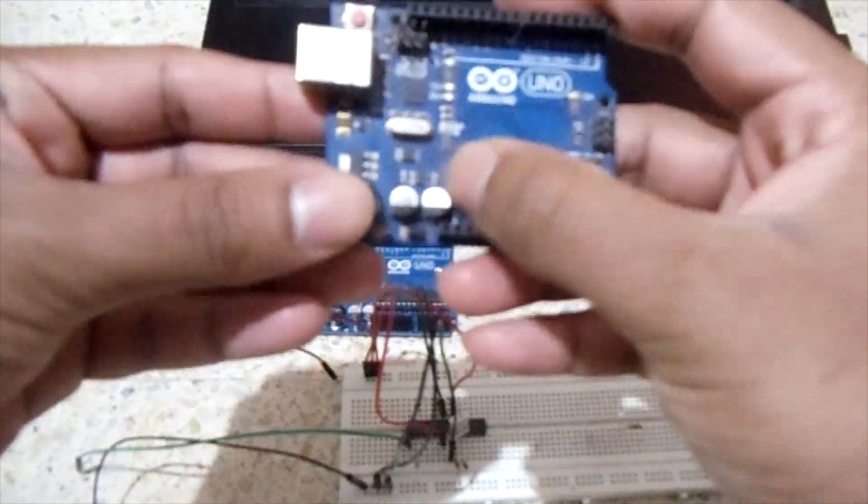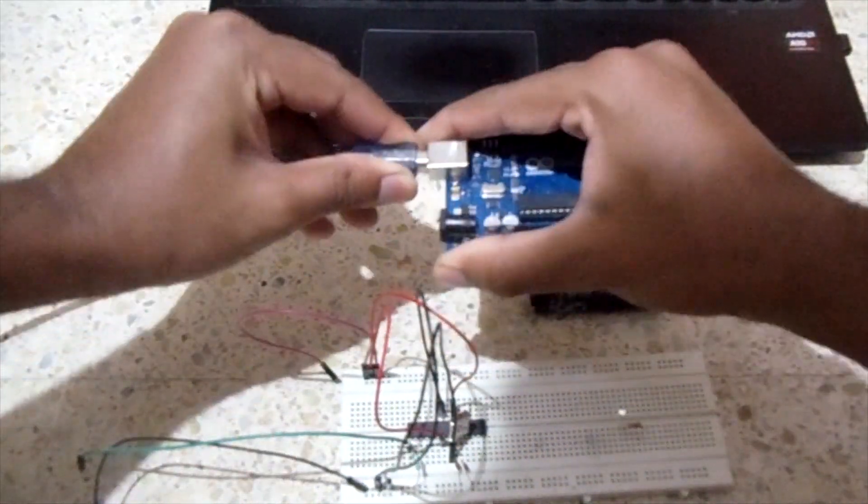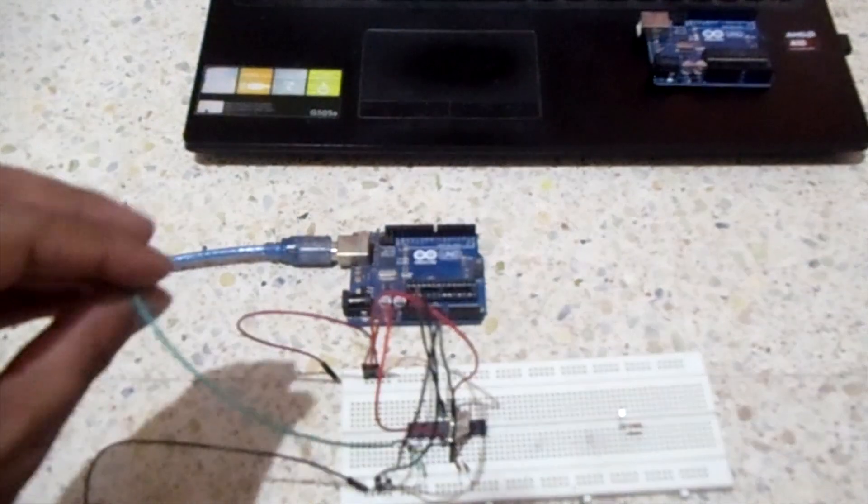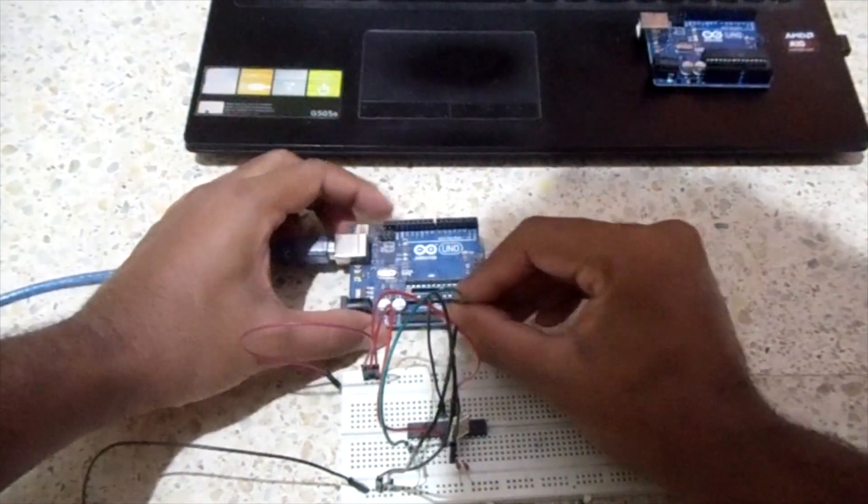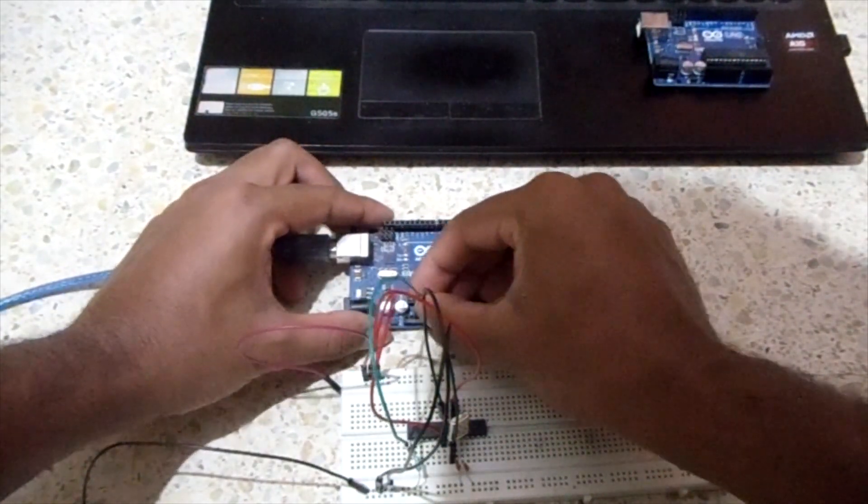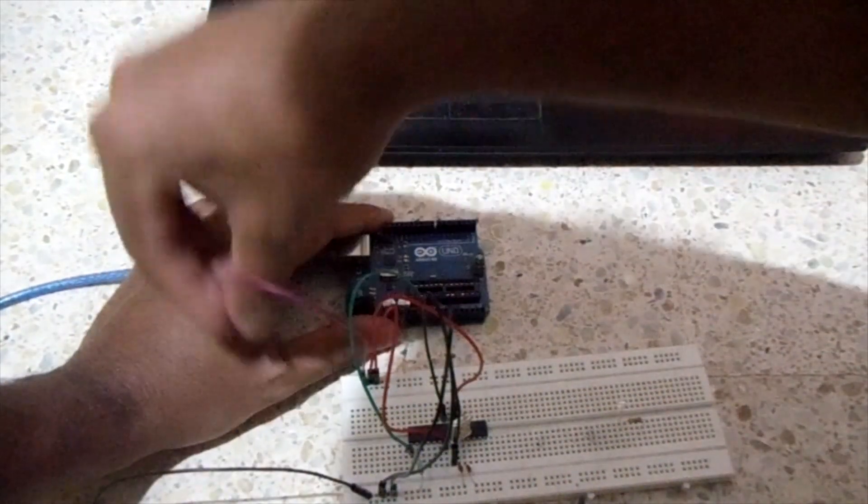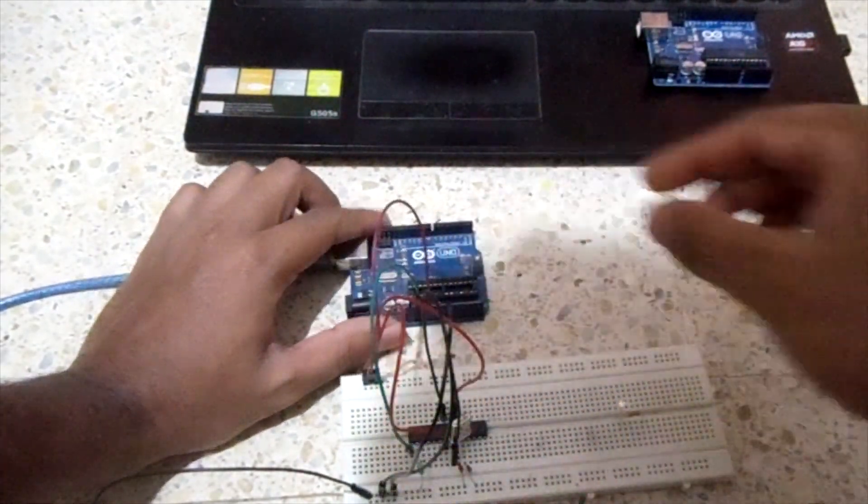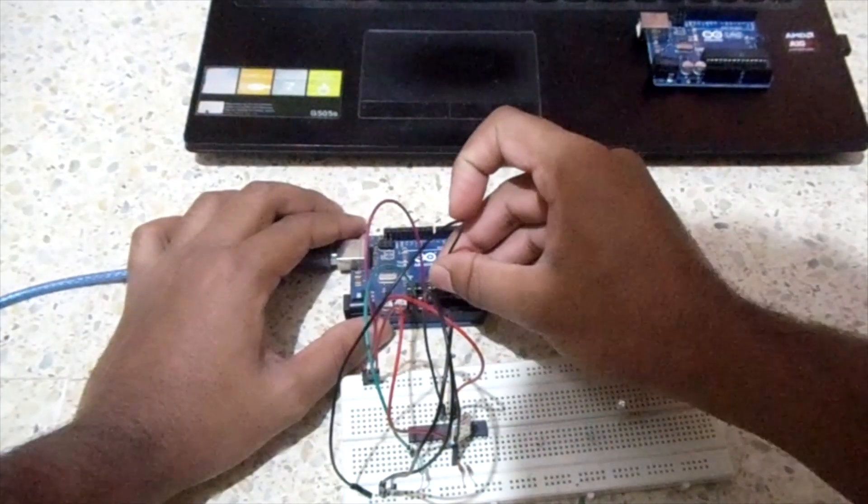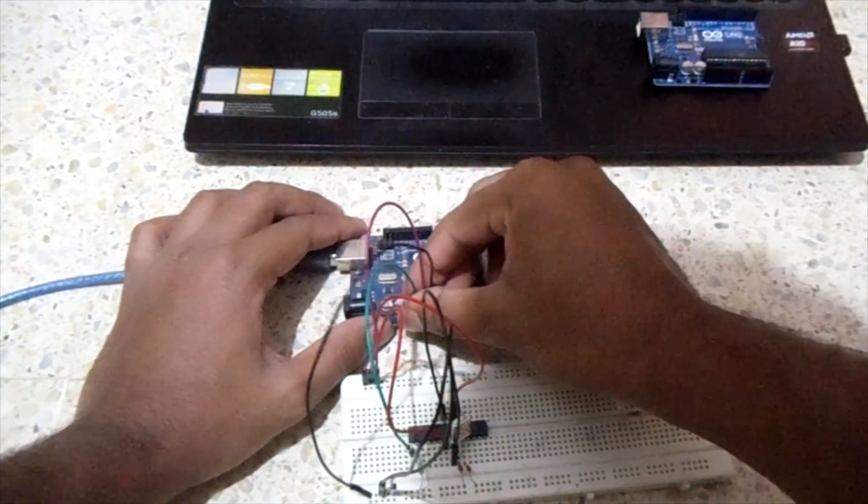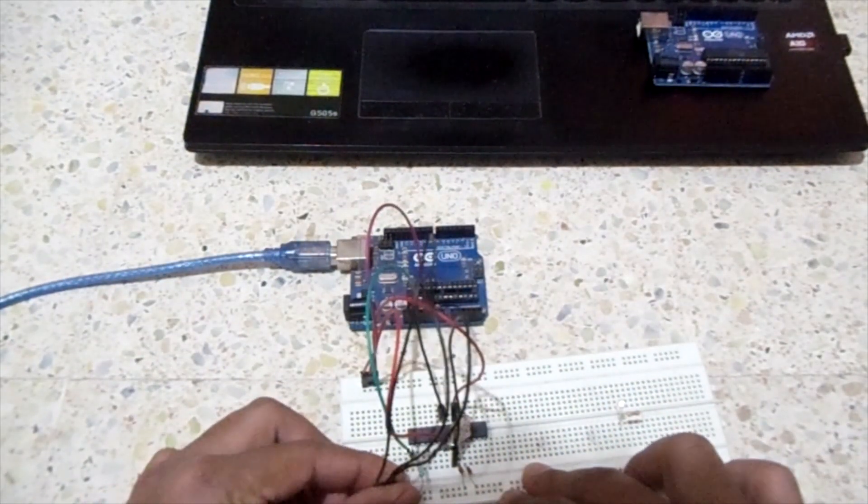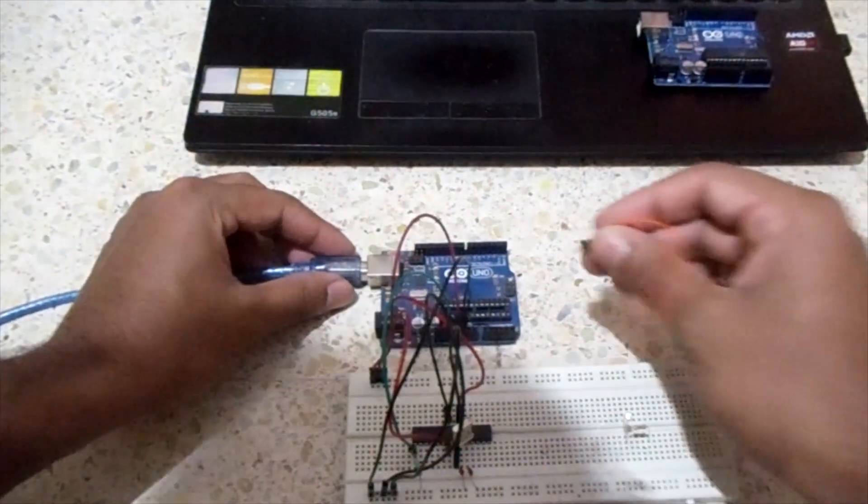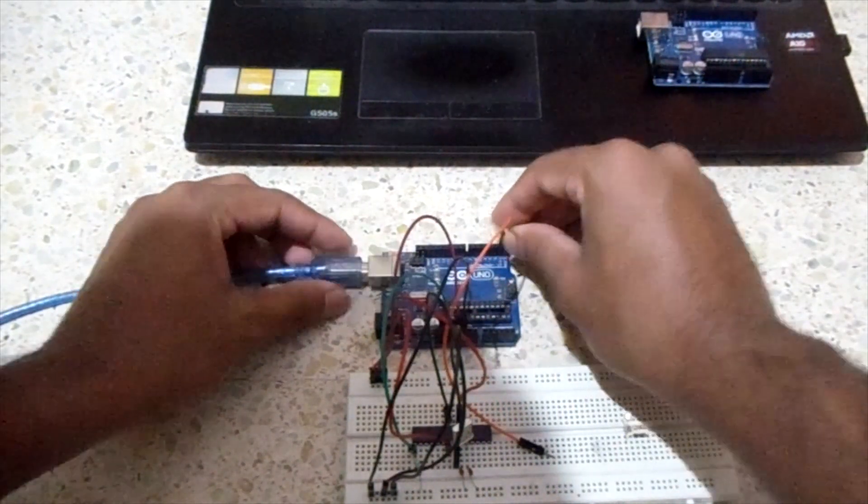For uploading the sketch we have to have a board without a microcontroller. Now connect pin number 1 of ATmega328P to reset. Then connect the 5V to VCC and GND to GND. Next connect pin number 1 of Arduino Uno board to pin number 3 of ATmega328P.